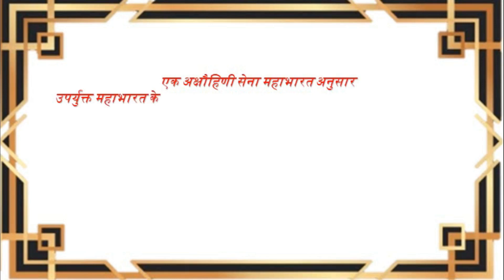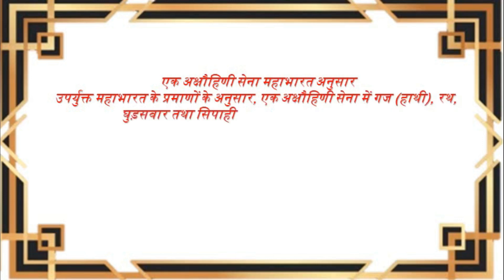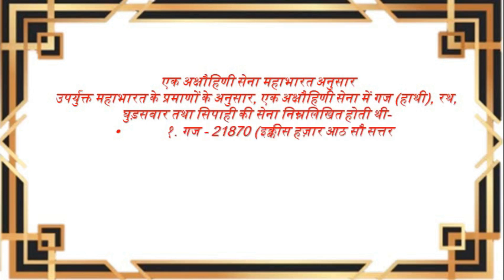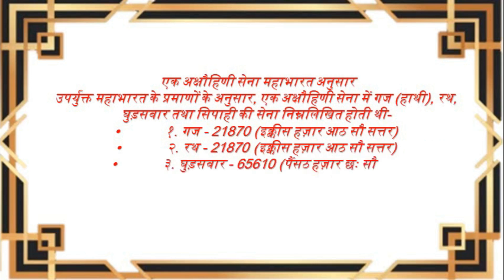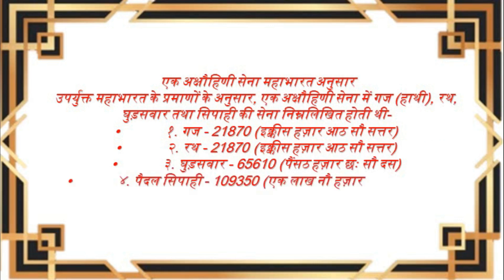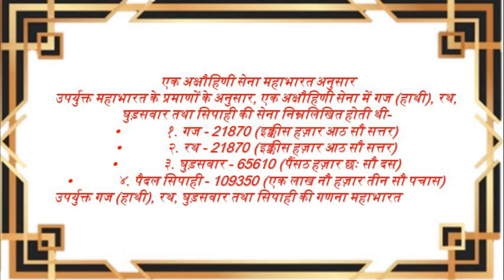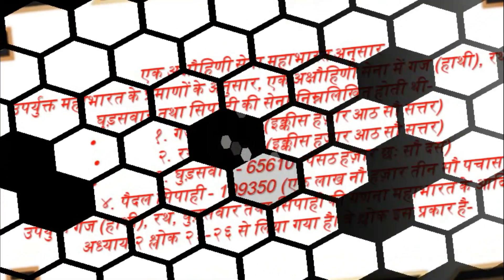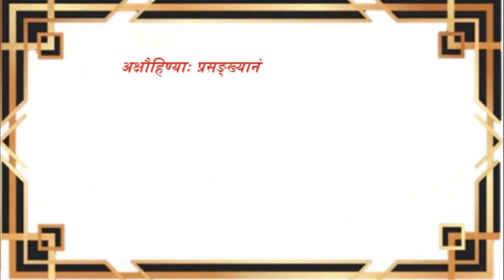5. वाहिनी (3 गण) = 81 गज + 81 रथ + 243 घुड़सवार + 405 पैदल सिपाही। 6. पृतना (3 वाहिनी) = 243 गज + 243 रथ + 729 घुड़सवार + 1215 पैदल सिपाही। 7. चमू (3 पृतना) = 729 गज + 729 रथ + 2187 घुड़सवार + 3645 पैदल सिपाही। 8. अनीकिनी (3 चमू) = 2187 गज + 2187 रथ + 6561 घुड़सवार + 10935 पैदल सिपाही।